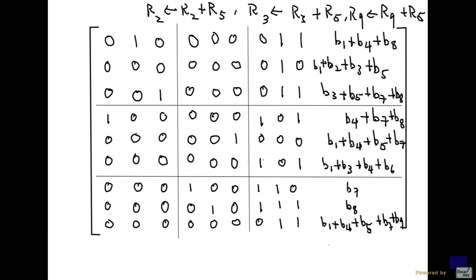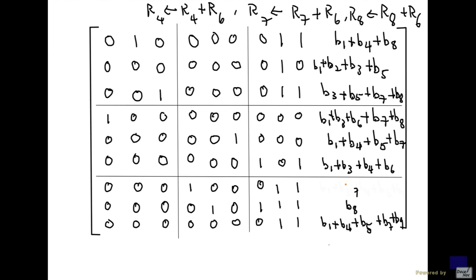Now add row 6 to rows 4, 7, and 8. Row 6 added to row 4 gives 0, 0, with right-hand side b1 plus b3 plus b6 plus b7 plus b8. Adding row 6 to row 7 gives 0, 1, with right-hand side b1 plus b3 plus b4 plus b6 plus b7. Adding row 6 to row 8 gives 0, 0, with right-hand side b1 plus b3 plus b4 plus b6 plus b8.